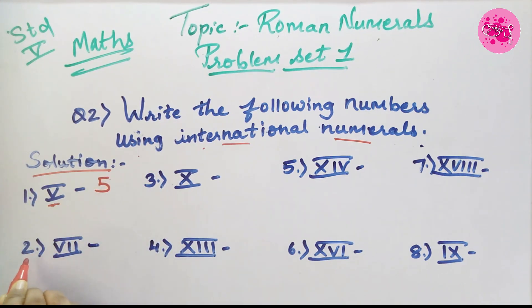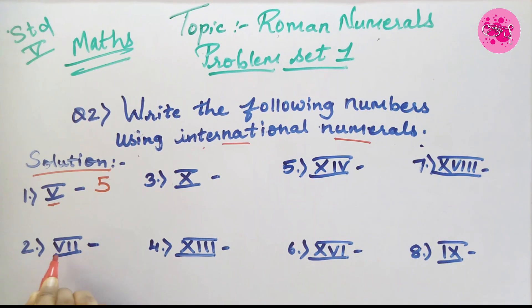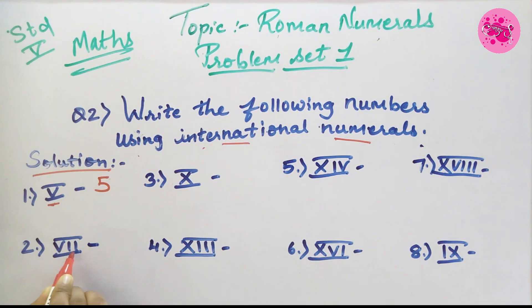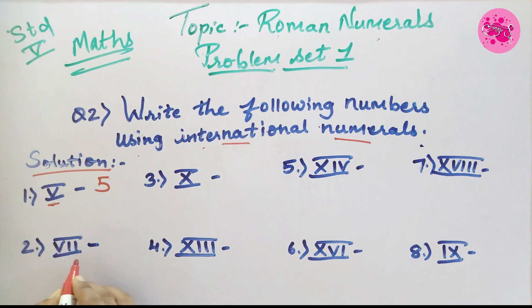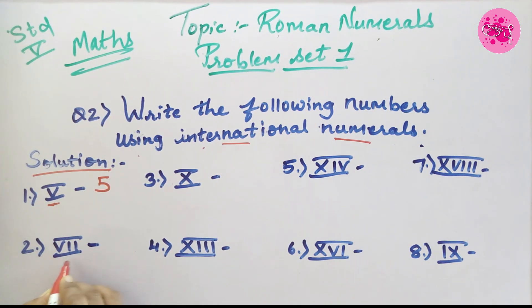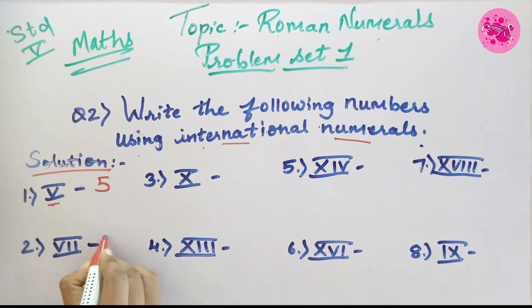Number 2: The Roman numerals V and II are given. V is the symbol of 5 and I is 1. So we add 5 plus 2, and the answer is 7.